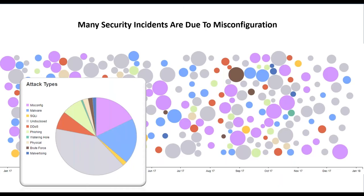This scatter diagram from IBM's X-Force shows the causes of major data breaches. Misconfiguration is a very common cause, and the size of the dot indicates the impact on the organization. Between misconfiguration and other undisclosed causes, we find this is a significant cause of data breaches and entirely avoidable in many instances.